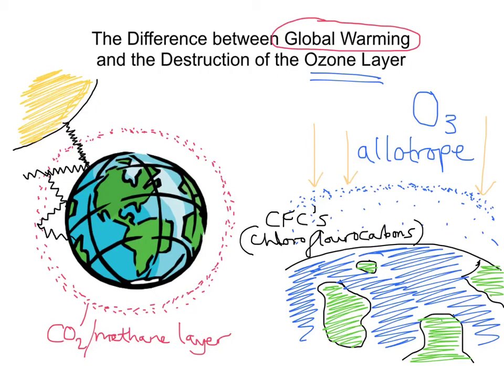When these CFCs — chlorofluorocarbons — react with the harmful UV rays, they actually produce very reactive chlorine atoms. I'll draw a few CFC particles here as red asterisks. These reactive chlorine atoms then react with the ozone and destroy it. So CFCs interact with the UV rays, allowing for the formation of reactive chlorine atoms, and those chlorine atoms react with the ozone — this O3 — and destroy it. That ultimately leaves holes or gaps in the ozone layer.